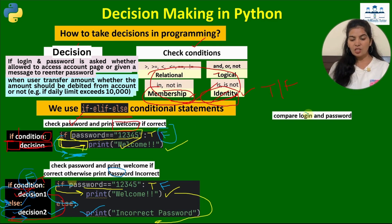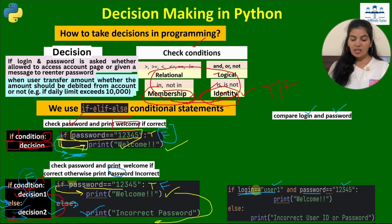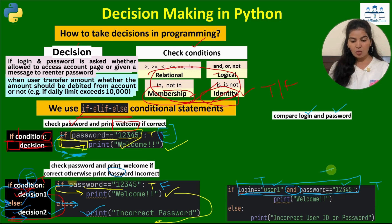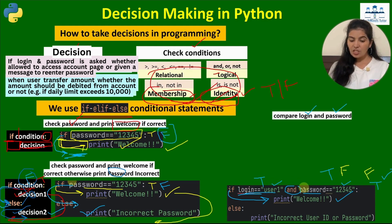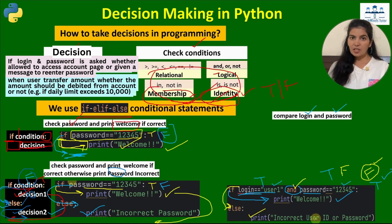If we are checking two conditions — login and password — we can combine them using the and operator, making one compound condition. This compound condition is true only when both sub-conditions are true. If one of them is false — say the password is wrong — the and operator gives a false result for the compound condition, and the interpreter jumps to the else block and executes whatever is written there.